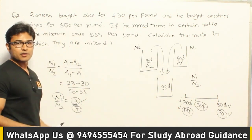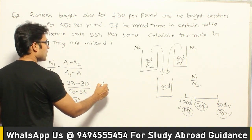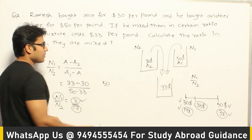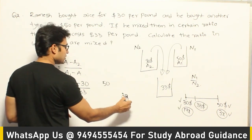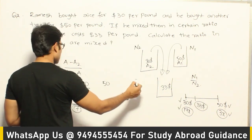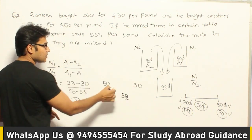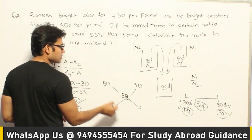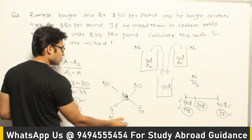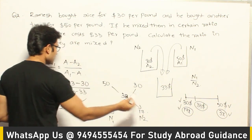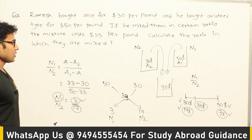You can also verify this using the diagram model. Write the higher value (50) on one side and the lower value (30) on the other, with the group average (33) in the middle. The difference between 50 and 33 is 17, and the difference between 33 and 30 is 3. Therefore N1 to N2 equals 3 to 17, confirming the same result.